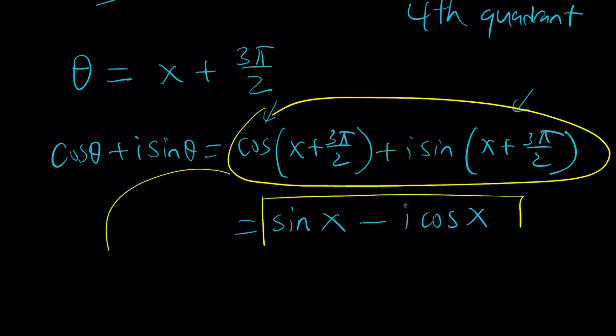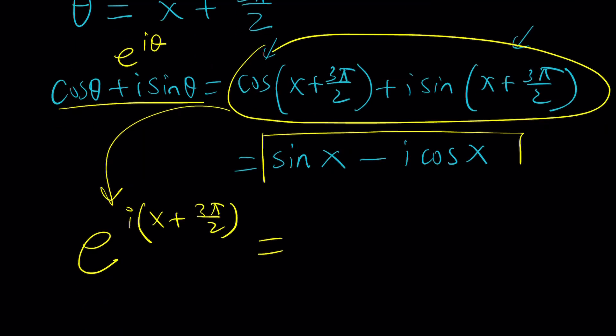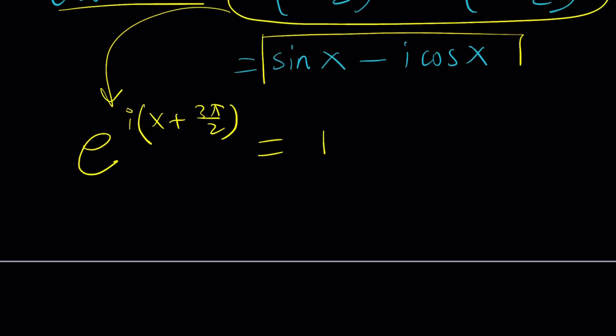So, now, I can go ahead and write it as e to the power i theta. So, this is going to become e to the power i theta, which is x plus 3 pi over 2. And this is equal to 1, because that was given as such. But let's replace 1 with something complex. Let's complexify it. We can write it as e to the power 2 pi n i, where n is an integer. Great. So, multiples of 2 pi is going to cut it. Now, when we set i times x plus 3 pi over 2 to 2 pi n i, i is going to cancel out.